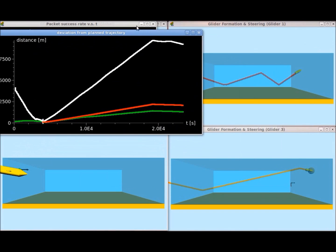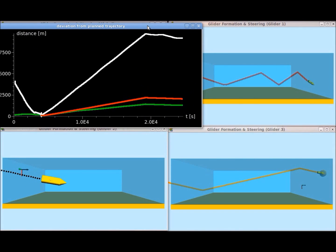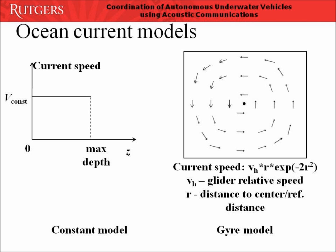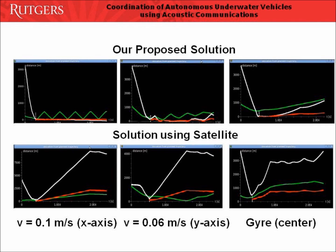This is due to the timely update of the position and control information using acoustic communications. We further try our solution on two additional different current models. One model is the constant ocean current flowing along the y-axis. The other model is the gyre ocean current model, which has a circular velocity field as shown in the slide. By comparing the performance of our proposed solution with the solution using satellite communications in different cases of ocean current models, we can see that our proposed solution obtains less coordination errors.